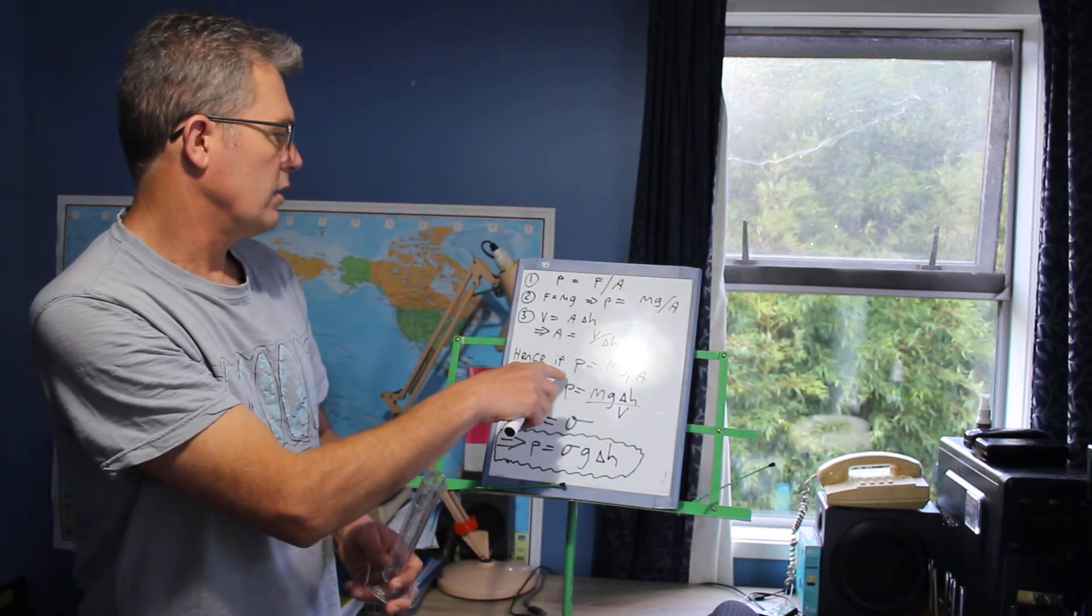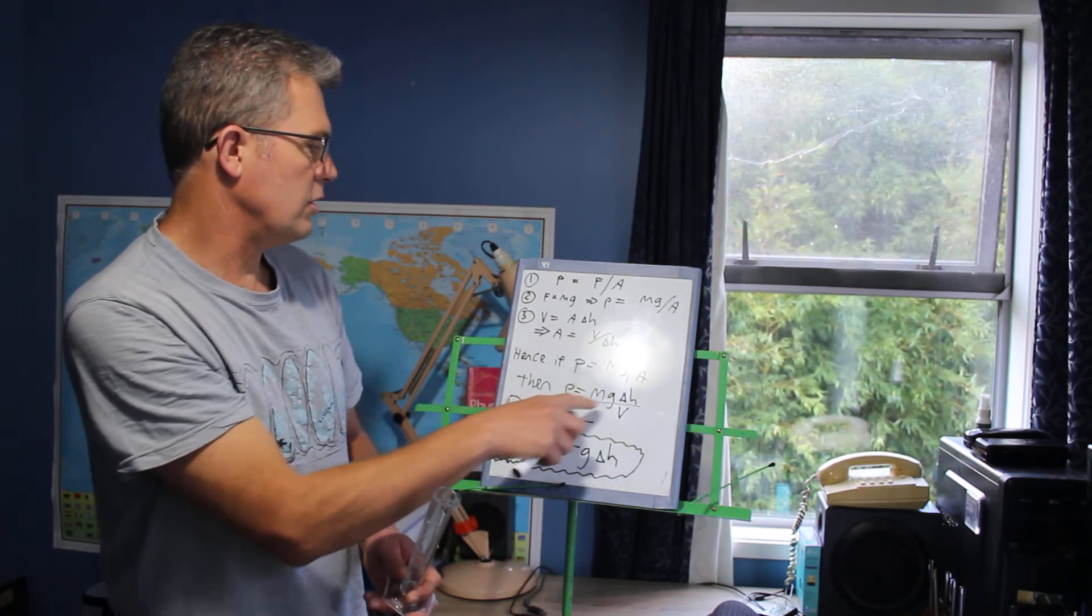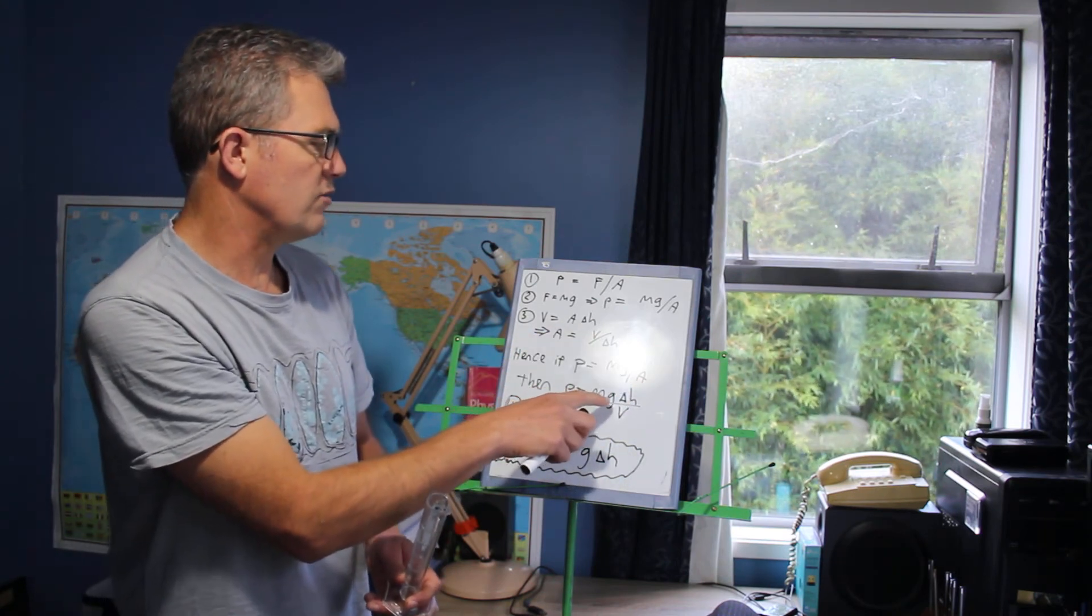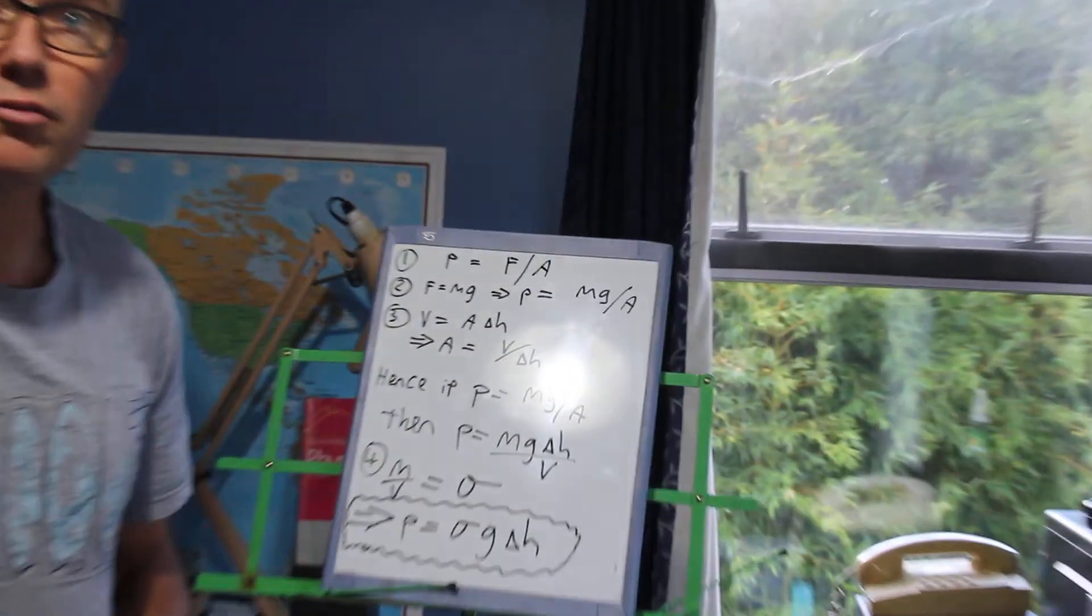So if you put that in where you see area, you suddenly end up with, instead of pressure equals mass times gravity divided by area, you put this in instead, you get pressure equals mass times gravity times change in height divided by volume. That all does make good sense.